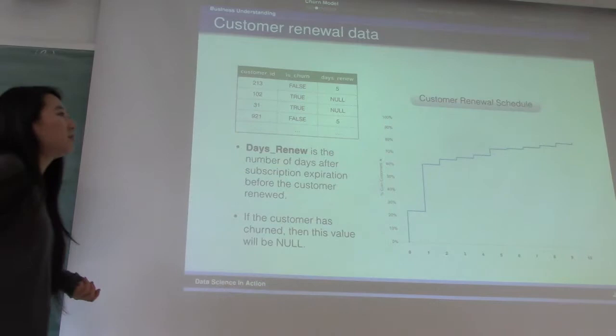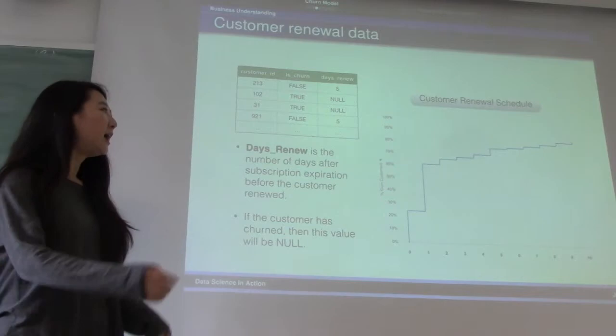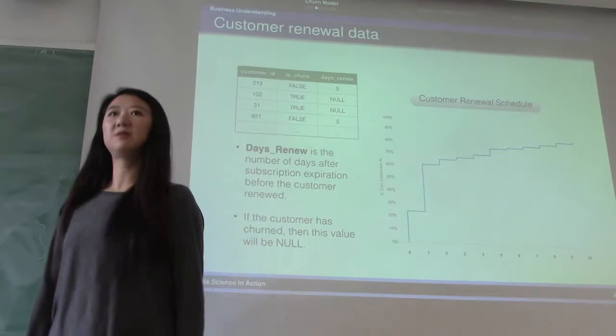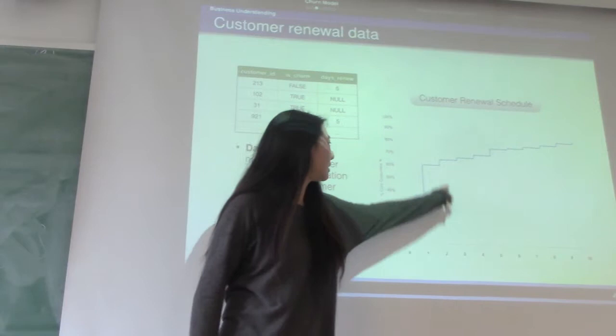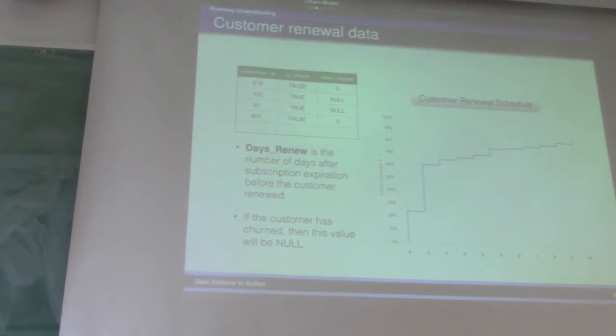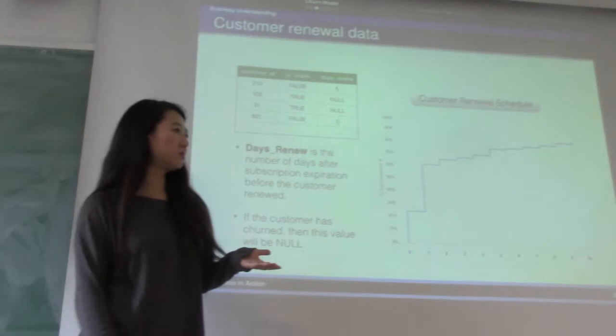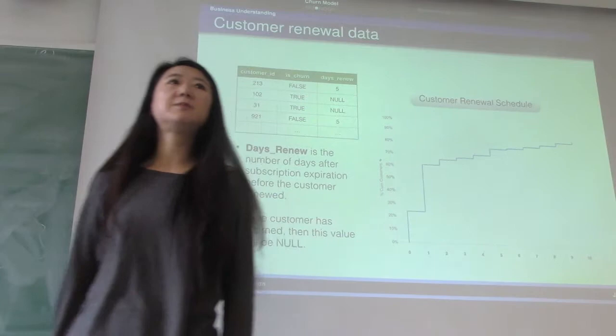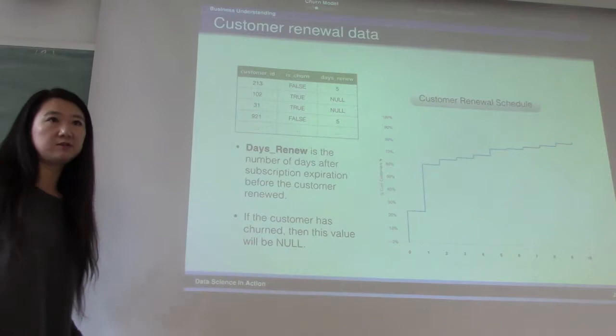From this data, you can do some quick explorations such as look at the customer renewal schedule. From this customer renewal schedule, you count the number of days after renewal on the X axis, and the Y axis is the distribution of all customers. You see that up to two days after renewal, about 60% of all customers have already renewed. In other words, two days after expiration, about 40% of customers have not renewed. Overall speaking, the overall renewal rate is about 82%, meaning about 18% of all customers have churned. You want to take some action on those 18% of customers.